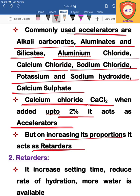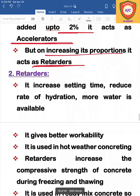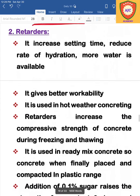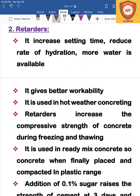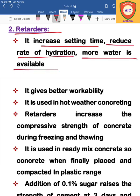Calcium chloride is a common accelerator admixture. The second admixture is retarders. Retarders have properties such as increased setting time, reduced rate of hydration, and increased water requirements.